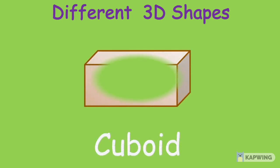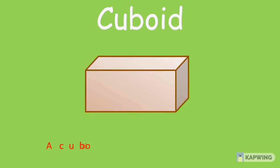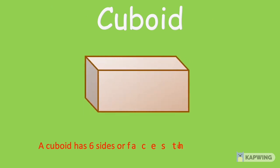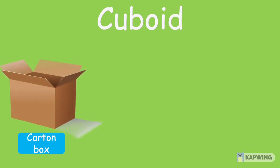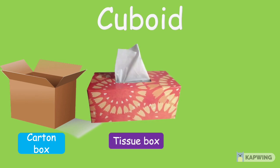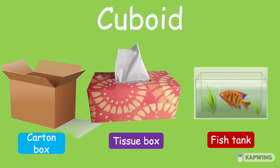And lastly we have a cuboid shape. A cuboid has six sides or faces that are all rectangles. Here we have a carton box with six sides or faces. They are all rectangles. We also have a tissue box in the shape of a cuboid. And a fish tank is also a good example for a cuboid.